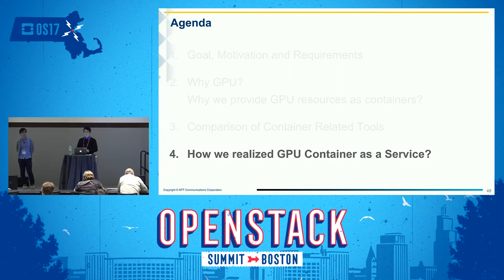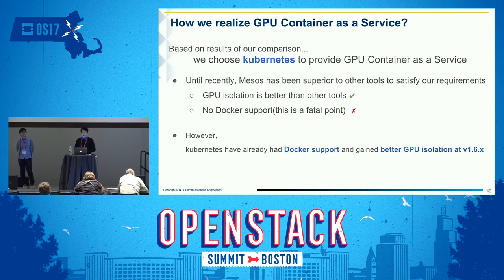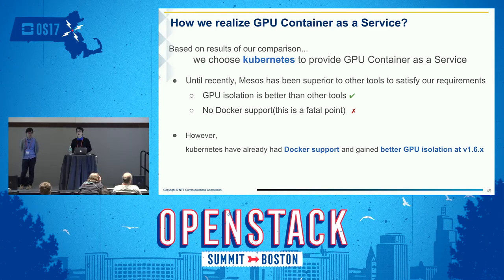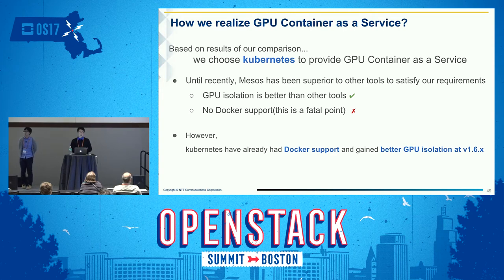In the final part of this talk, I'll describe how we decided to realize our GPU container as a service. Based on the comparison results, we chose Kubernetes. At the time we submitted our call for paper, Mesos had advantages in GPU isolation, though it lacked Docker support. However, the recently released Kubernetes version 1.6 provides both Docker support and strong GPU isolation, which made us change our decision to Kubernetes.